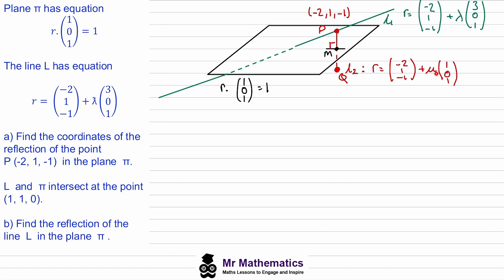If we can work out the value of mu that takes us from P to M, then we can double it to work out from P to Q. We can then substitute this value of mu into the equation of this line to get the coordinates of point Q. We work out mu by taking the general position vector of this line r, substituting that into the equation of the plane, and dotting it with the normal vector.